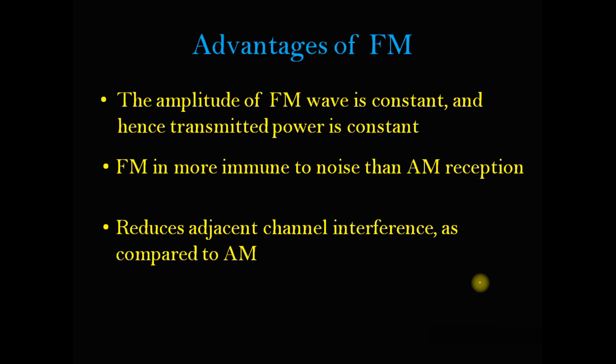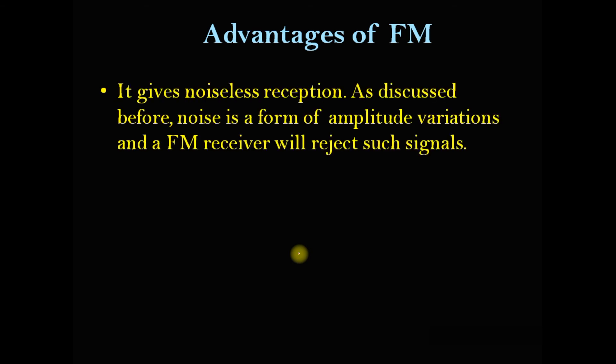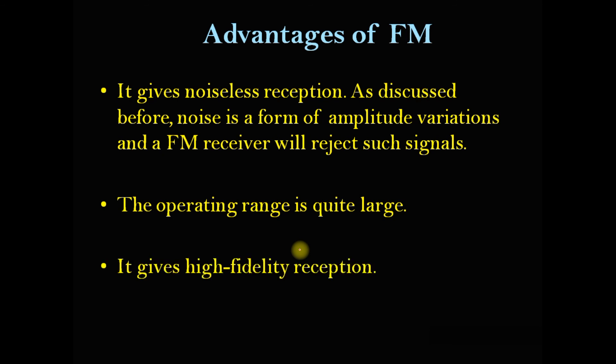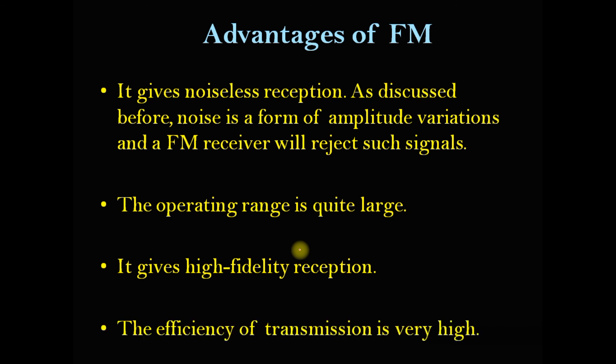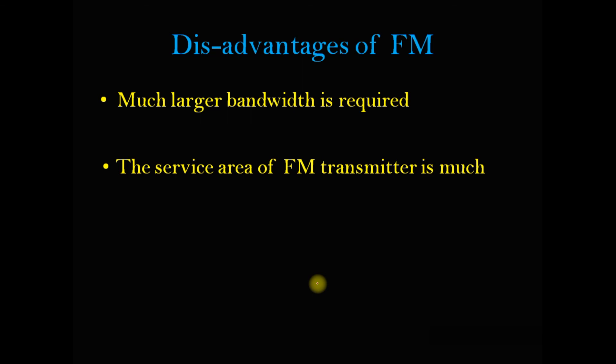FM is more immune to noise than AM reception — it won't allow noise or interference of signals. These are the advantages: FM gives noiseless reception, the operating range is quite large, it gives high fidelity, and there is no interference of channels. The efficiency of transmission is very high. Disadvantages: FM requires a much larger bandwidth and the service area of FM is limited. Thank you for watching this video. Please subscribe for more notifications and videos.